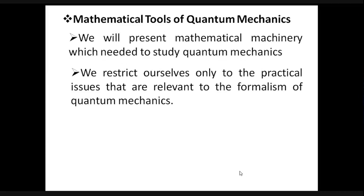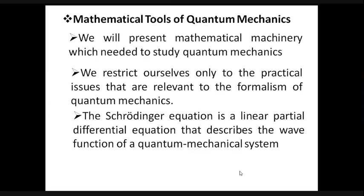Here we will discuss the tools which we need for the formalism of quantum mechanics. You know that there is the Schrödinger equation, and you know that this is a partial differential equation. It can describe the dynamics of quantum mechanical systems by the wave function, which is the key parameter. The trajectory, position, and energy of those systems at quantum mechanical level can be retrieved by solving the Schrödinger equation. All information regarding the subatomic particle lies within the wave function, and the wave function can be solved using the Schrödinger equation.